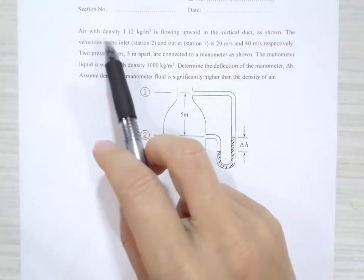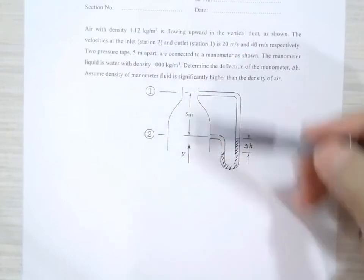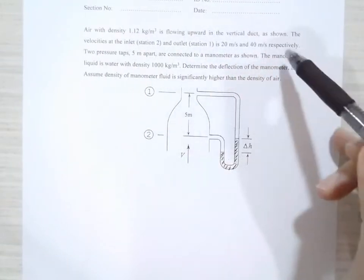In this question, air with density 1.12 kg per meter cube is flowing upward in the vertical duct as shown in this diagram here.